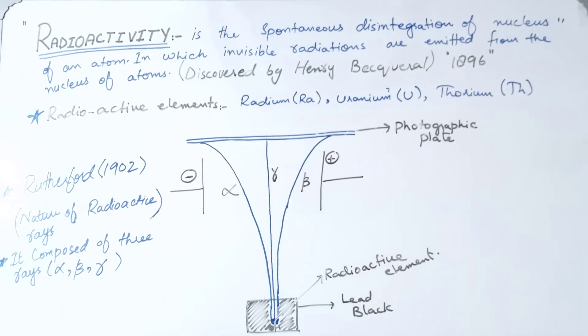Radioactivity has two types: natural radioactive elements and artificial radioactive elements.